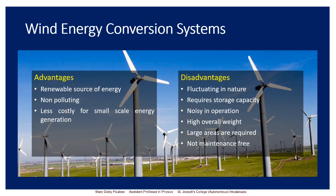So these were the advantages and disadvantages of the WECS system. In today's session we saw what a wind energy conversion system is — it converts wind energy to electrical energy — and we saw the different parts: the wind turbine, the windmill head, the transmission system, the control system, the tower or supporting structure, and the generator. The advantages and disadvantages were also seen. With that we have come to the end of today's session. Thank you.